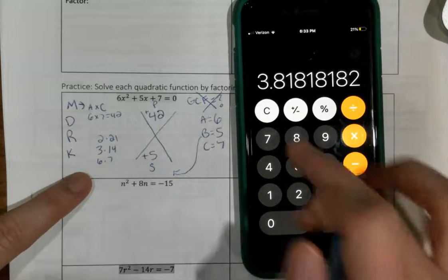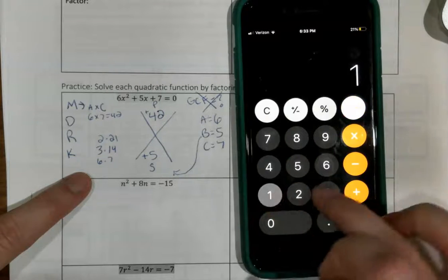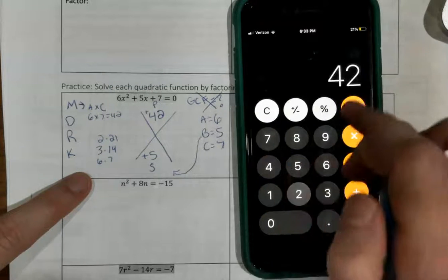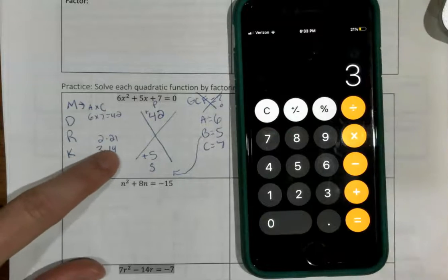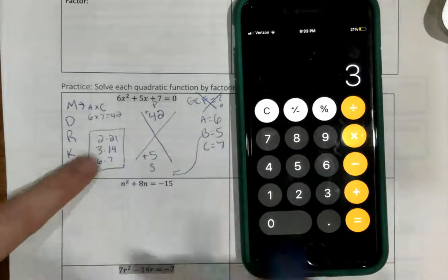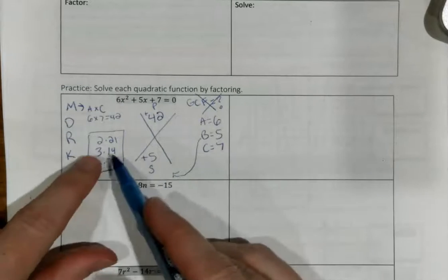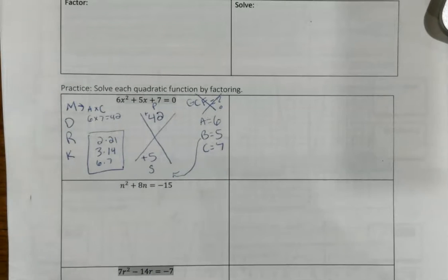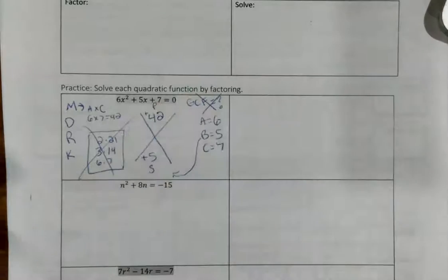I'm at 6 now, and I get 6 and 7. That won't add to be 5. And now I'm back to where I started with the 14 and the 3. So, these are my only sets of factors for 42, and none of them are going to add up to be 5. None of the factors work.